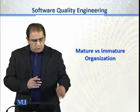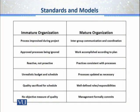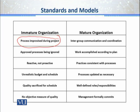Just look at the screen. The first factor that indicates how mature or immature an organization is: processes are improvised during the project in an immature organization. But within a mature organization, there is very good communication — this means what to do next. Number two: immature organizations usually bypass or ignore the standard things.